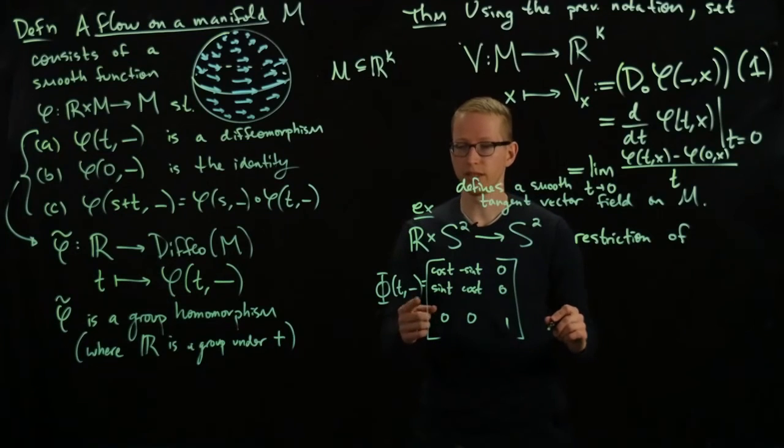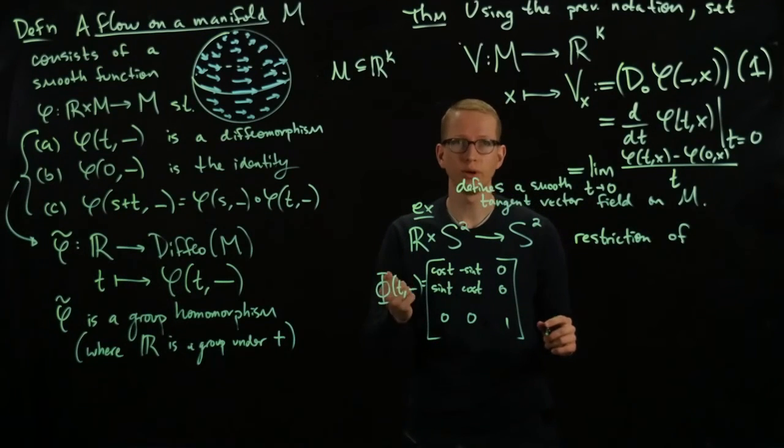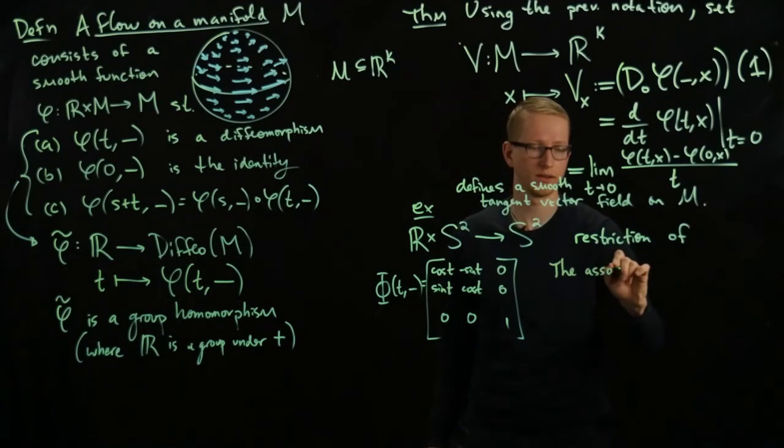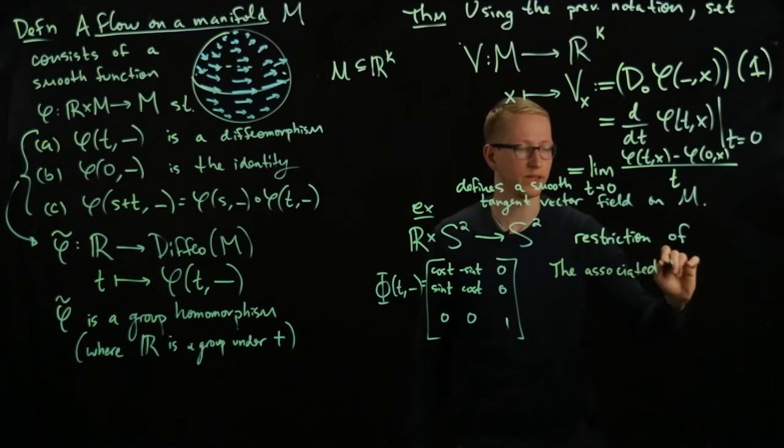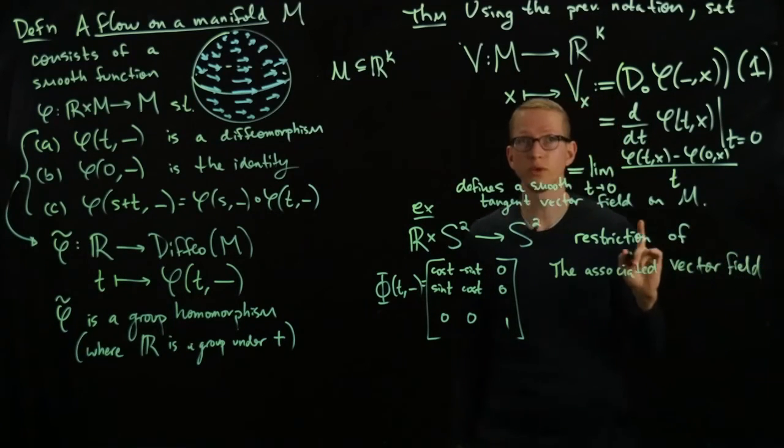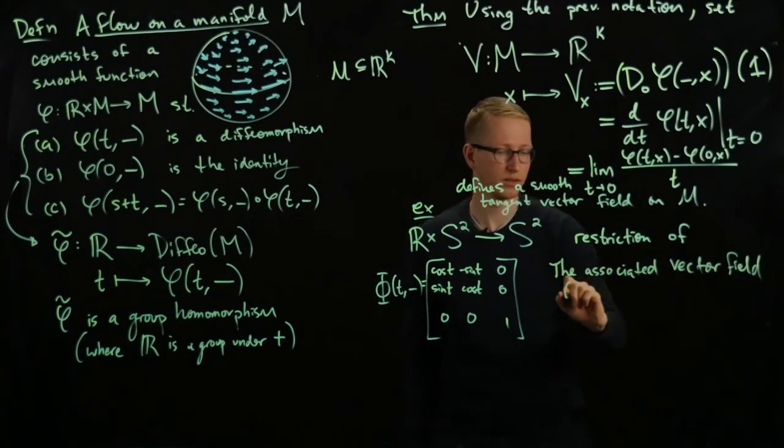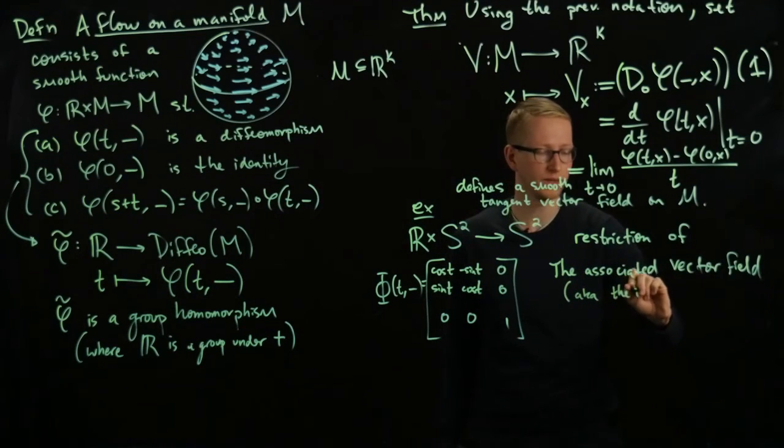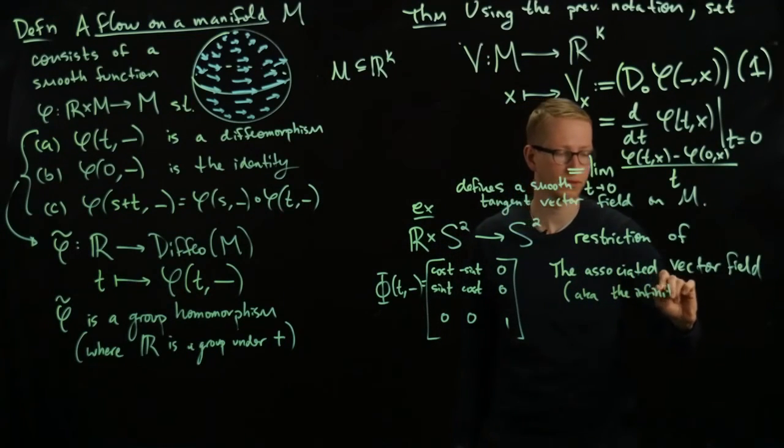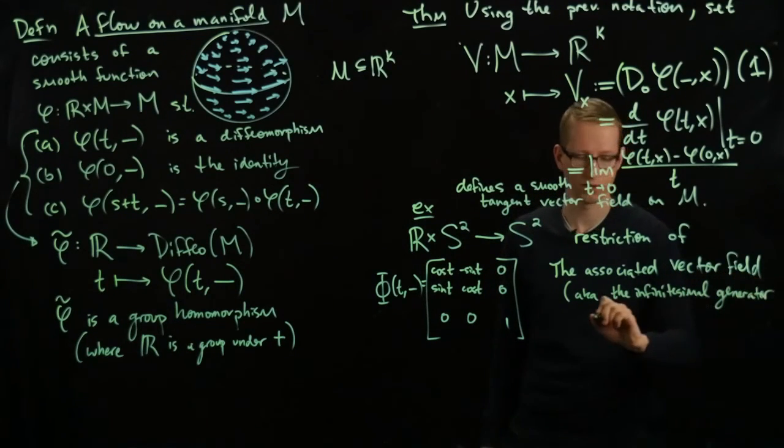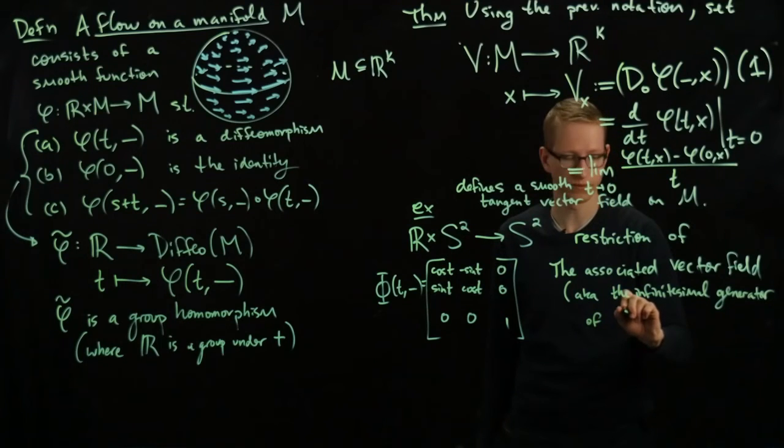And we can also calculate what the vector field is at the point (x,y,z). The associated vector field, which we, by the way, call, aka, the infinitesimal generator of φ.